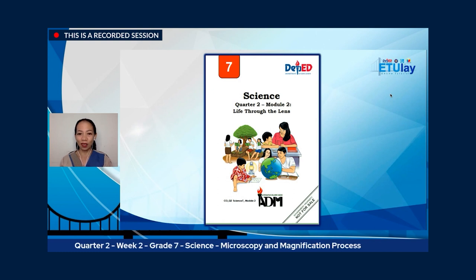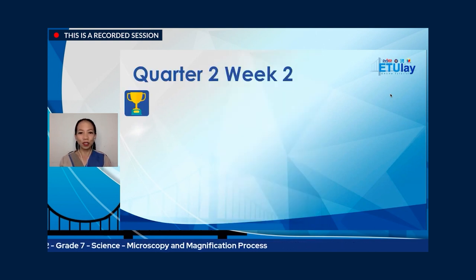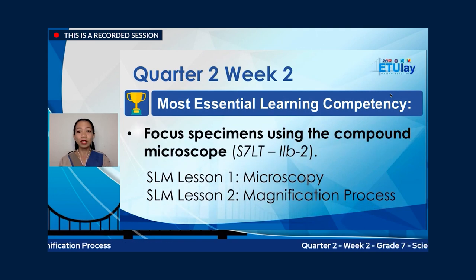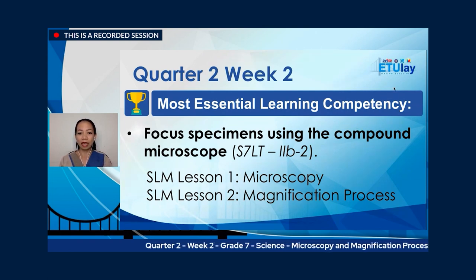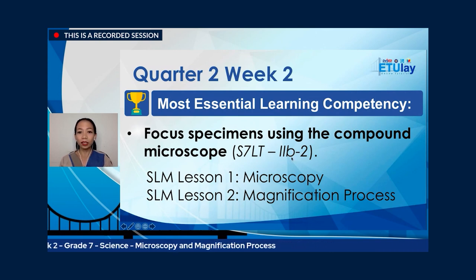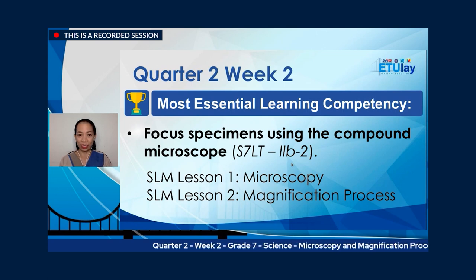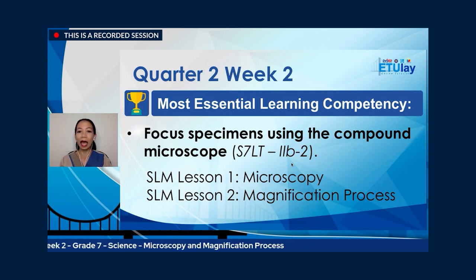This is from DepEd Soxogen Region. Our most essential learning competency for this week is for you learners to focus specimens using the compound microscope, with the code 7S7LT — living things in the environment — for quarter two, week two. The SLM is divided into two lessons: lesson one is on microscopy, and lesson two is on magnification process. Today, we will learn these two lessons and how you can apply them as you learn science.